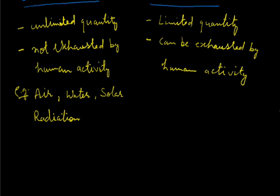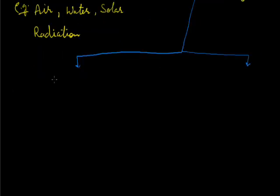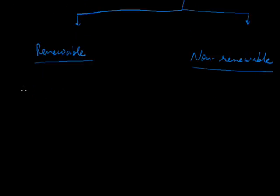Now exhaustible natural resources can be further divided as follows. It can be divided into renewable natural resources and non-renewable natural resource. Renewable natural resource, it's clear from its name that these can be obtained once again.